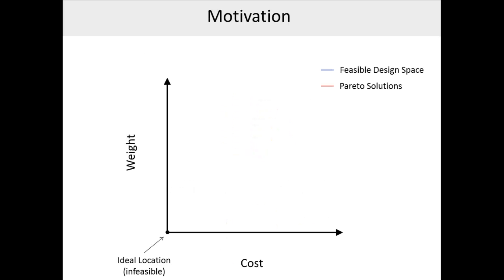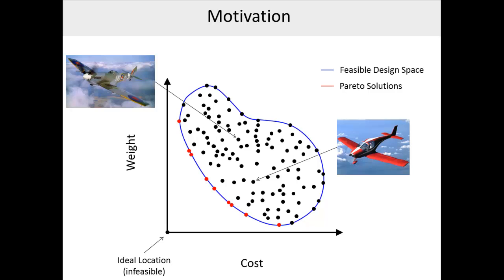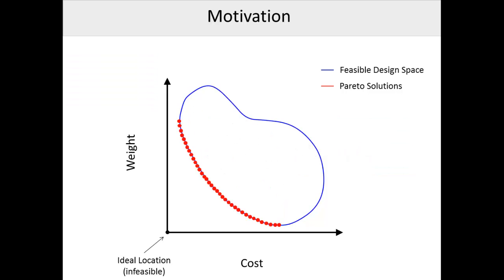Most design scenarios have multiple objectives that conflict with each other. In these scenarios, the designer often explores the design objective space of the problem, like the one shown here in blue, where each point represents unique design. Generally, designers are especially interested in Pareto solutions, also known as non-dominated solutions, because by definition, no other solution is better than them in all objectives.